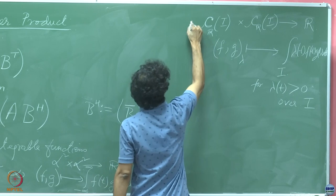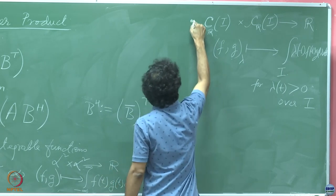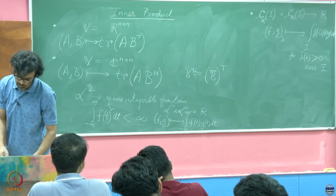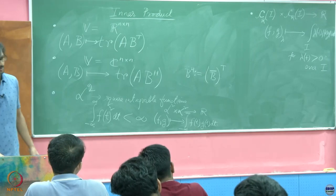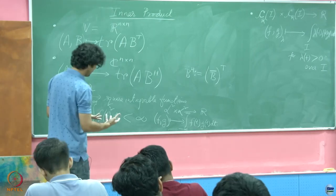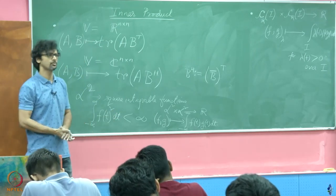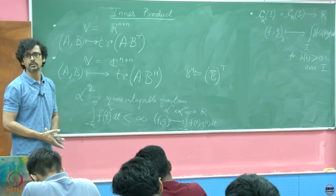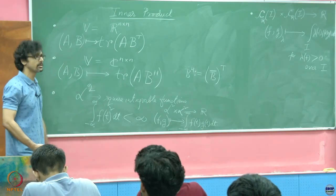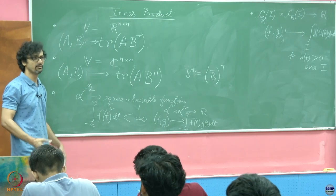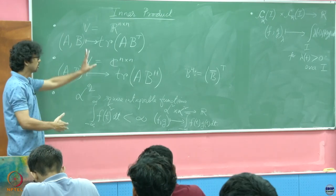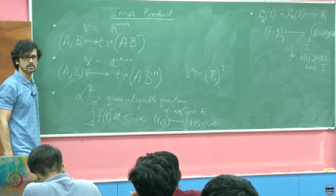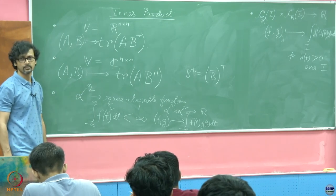You see, all these are exotic vector spaces and yet they all share this common property: they have an inner product. Inner products need not necessarily look just like those dot products that you have seen over Euclidean spaces. Rather, anything that meets those four properties which we have identified with inner products qualifies as a legitimate inner product over the corresponding vector space.